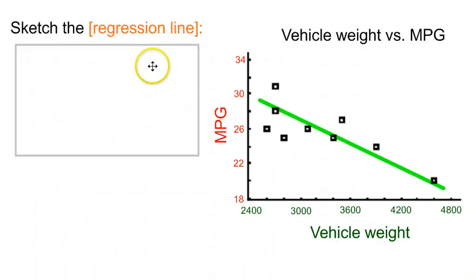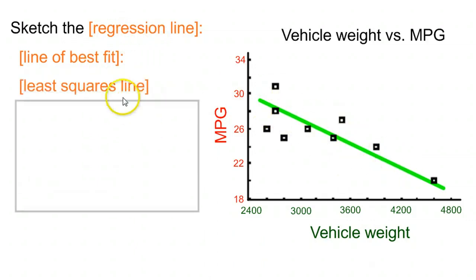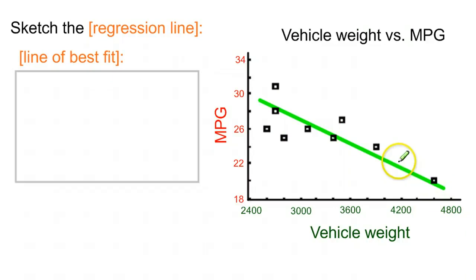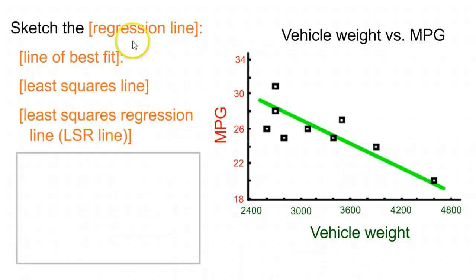Now, when I say sketch the regression line, you have to be aware there are multiple terms for this. I'll try to use regression line primarily, but sometimes it's called the line of best fit, which makes sense. The least squares line - and at first that won't really make sense, but the way that it's mathematically calculated involves figuring out how far away all these points are from the line, and then squaring them and trying to make that number as small as possible. So the idea is it's trying to find the smallest squares. It's also sometimes called the least squares regression line, and then sometimes shortened with an abbreviation, LSR. So although I'll try to use regression line, just know there are many terms for this.